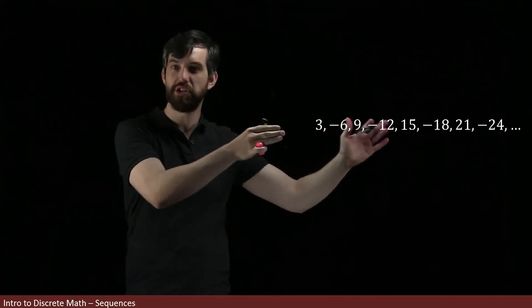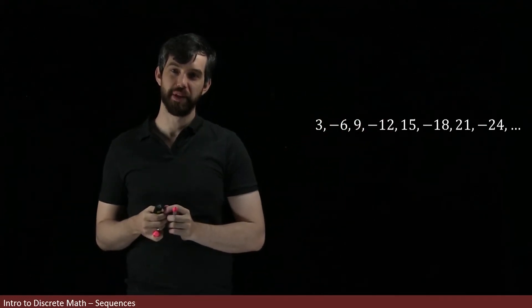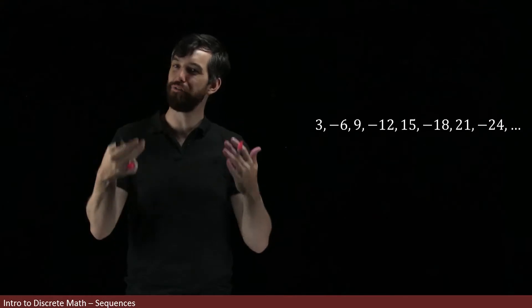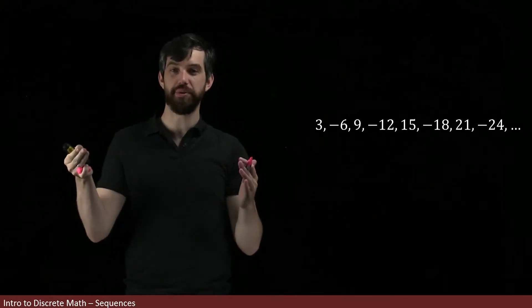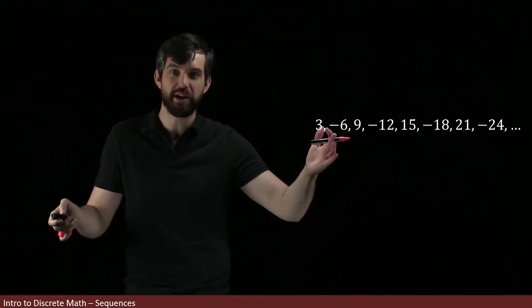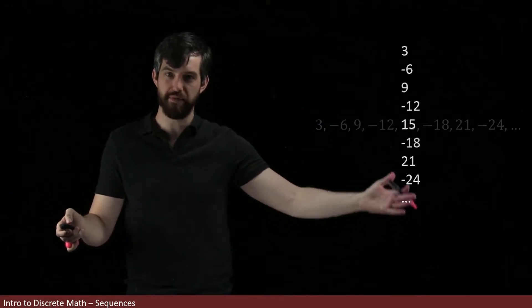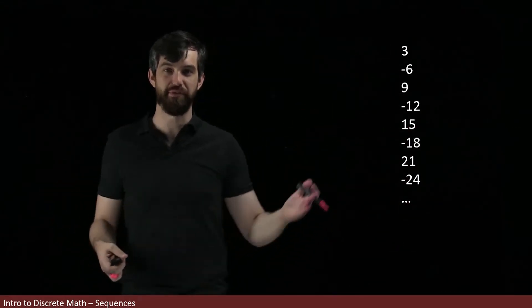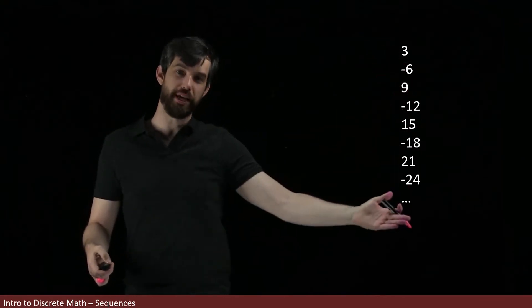Let's investigate this sequence we were just looking at a little bit more carefully, because I want to give a different view on what a sequence really is. Now currently I have it written here horizontally, but I could also go and switch it around and write it vertically as well. That shouldn't make any difference. It's still an infinite ordered list.